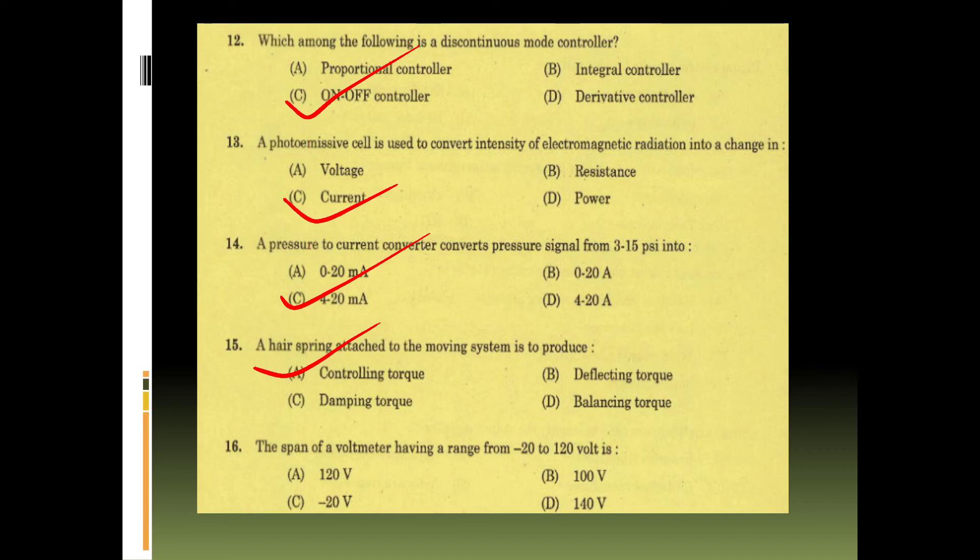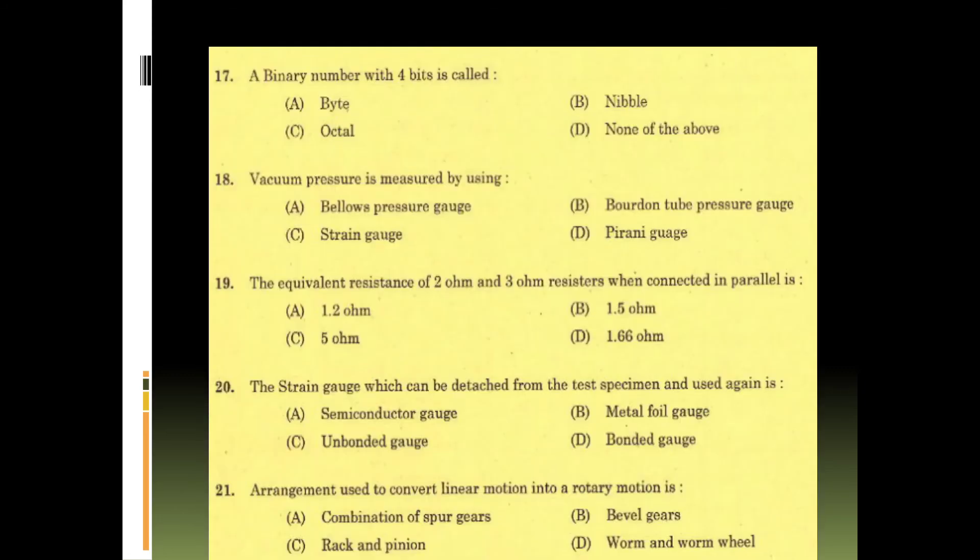Span of a voltmeter having a range from minus 20 to 120 volt is option D, 140. A binary number with 4 bits is called - byte, nibble, octal, or none. It is option B, nibble. Eighteenth question: vacuum pressure is measured by using bellows pressure gauge, Bourdon tube pressure gauge, strain gauge, Pirani gauge. Answer is Pirani gauge, option D. Equivalent resistance of 2 ohm and 3 ohm resistances in parallel - 1 by 2 plus 1 by 3, answer is option C, 1.2 ohm.